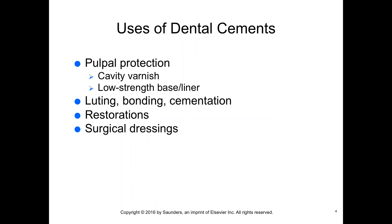Varnishes are solutions of natural resins or synthetic resins dissolved in a solvent such as alcohol or chloroform. They are applied in layers where the varnish seals the tubules from the penetration of irritating chemicals, protecting the pulp.